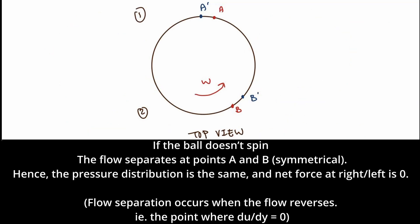If the ball doesn't spin, the flow separates at points A and B which are symmetrical. Hence, the pressure distribution is the same and net force at right or left is zero. Flow separation occurs when the flow reverses, for example, at the point where du over dy is equal to zero.